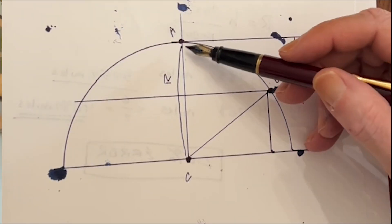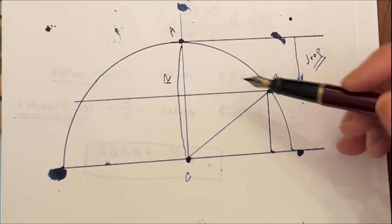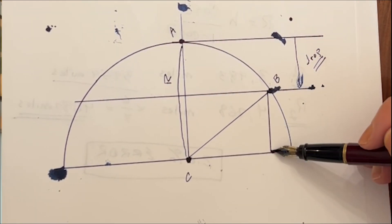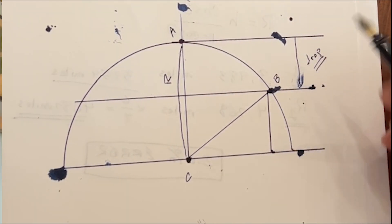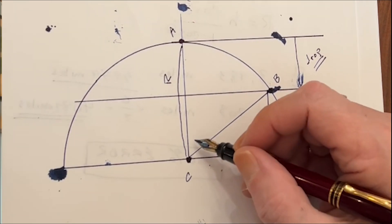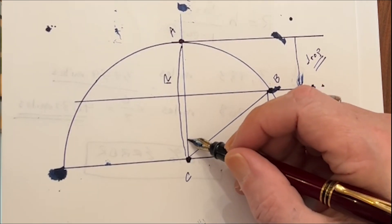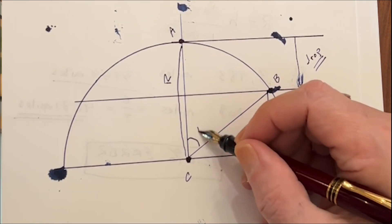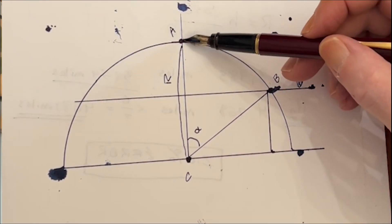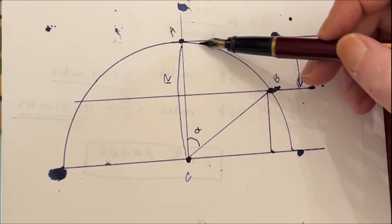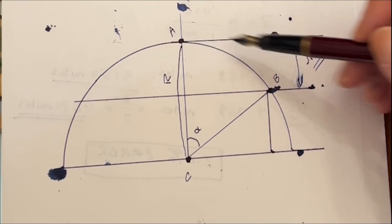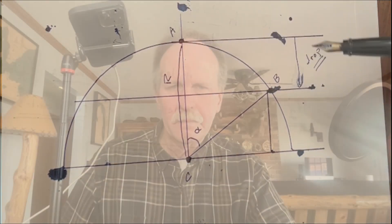Now the drop is equal to the radius minus this segment right here. We've got a couple of different angles here. First, let's have a look at this one — we'll call this angle alpha. And this is the distance along the surface of the sphere between A and B.